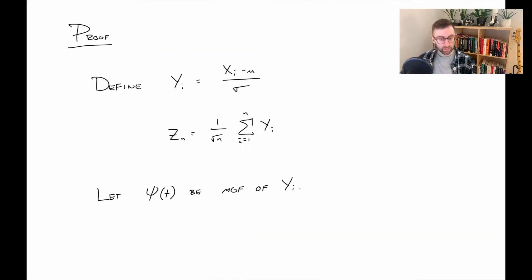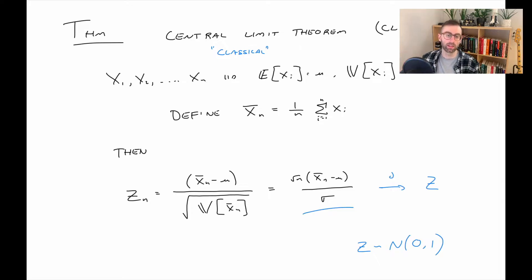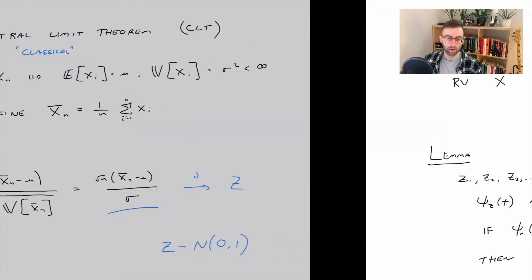So now actually getting into the proof. The first thing we're going to do is define a new set of random variables, y sub i, which are basically just standardizing the x sub i's. The expected value of each yi is zero, and the variance of each yi is one. Now if we add up all those random variables and divide by square root of n, that gives us exactly z sub n. This quantity is exactly equivalent to this quantity here, just written in a different way because it's going to help us out.